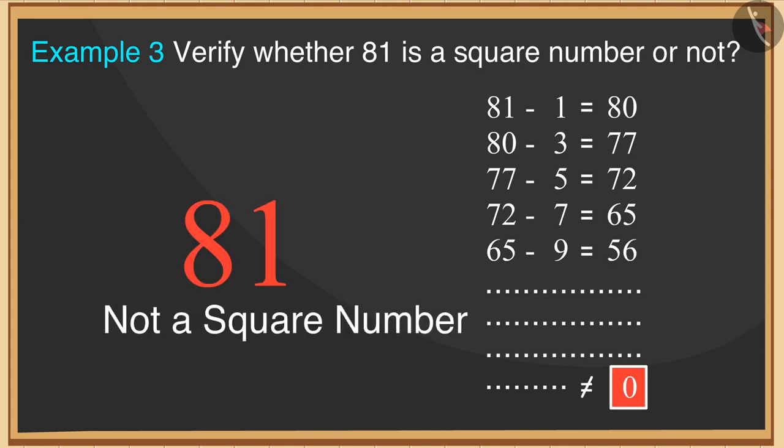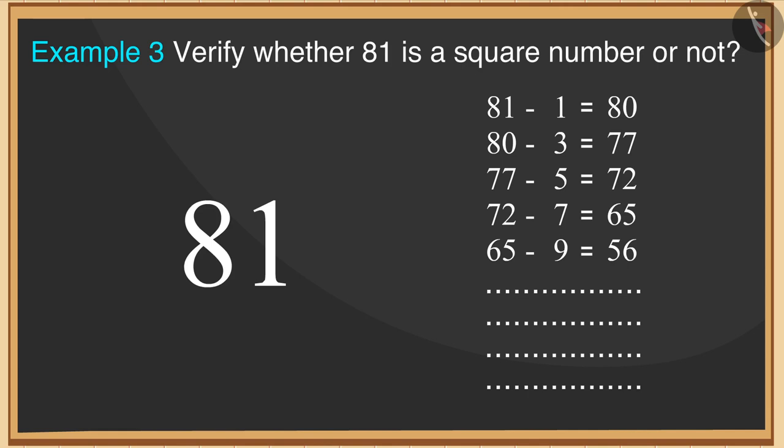Otherwise, this number will not be a square number. Let's verify together. Here, we observe that by subtracting consecutive odd numbers, we finally get 0. Therefore, we can say that 81 is a square number.